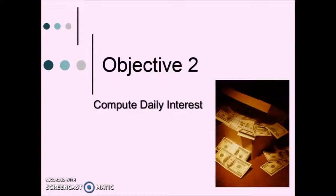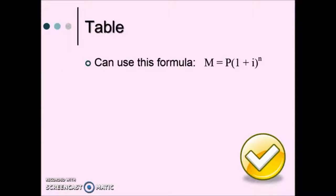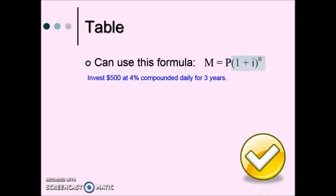So let's look at how we compute daily interest. Sometimes we will have savings accounts that pay compound interest daily. We'll see them in savings accounts, passbook savings, or checking accounts that pay interest as well. We can use the compound interest formula that we saw previously. Here is an example: if we have $500 at 4% compounded daily for three years, this is what the formula would look like.